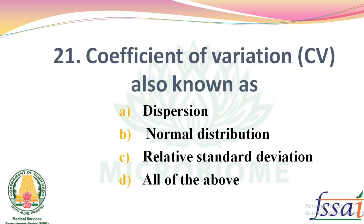Coefficient of Variation (CV) also known as — Options: Dispersion, Normal Distribution, Relative Standard Deviation, all of the above. The right answer: Option C, Relative Standard Deviation.